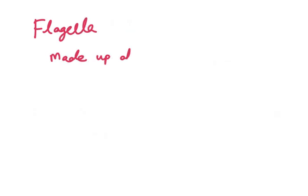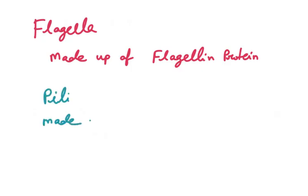After that there is a very similar structure that is flagella. Flagella is made of a protein which is called flagellin protein and the pili which has been discussed in the previous slide is made of the protein named pilin protein.